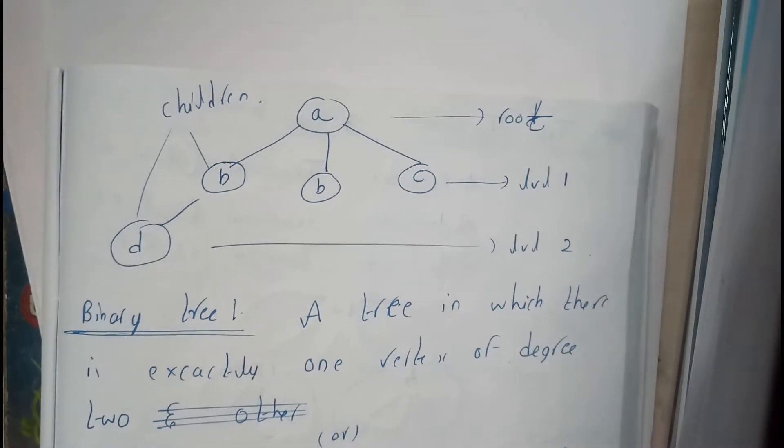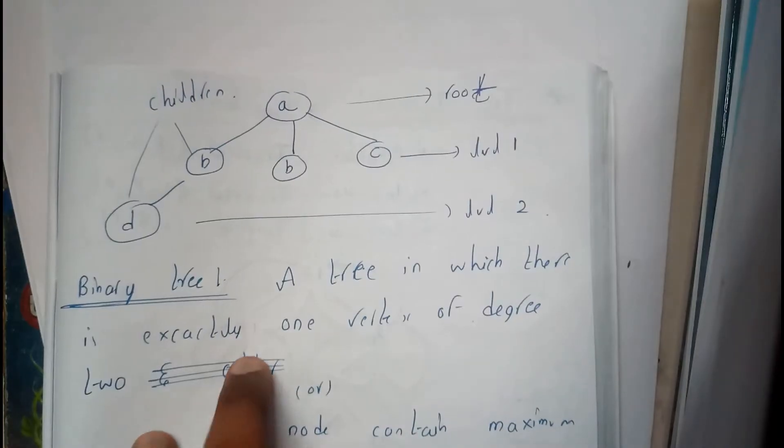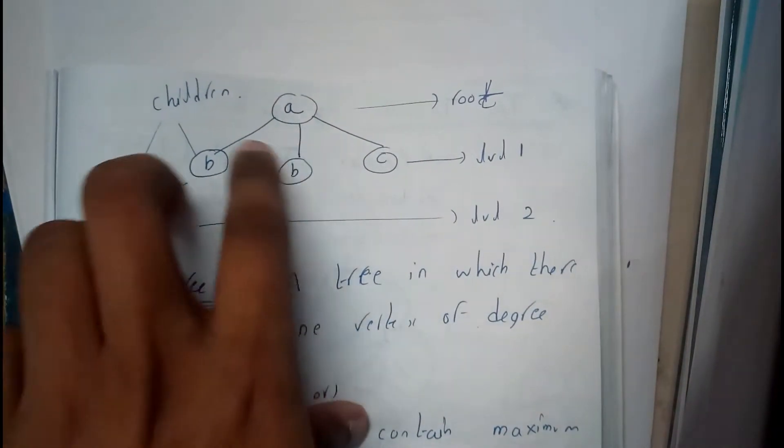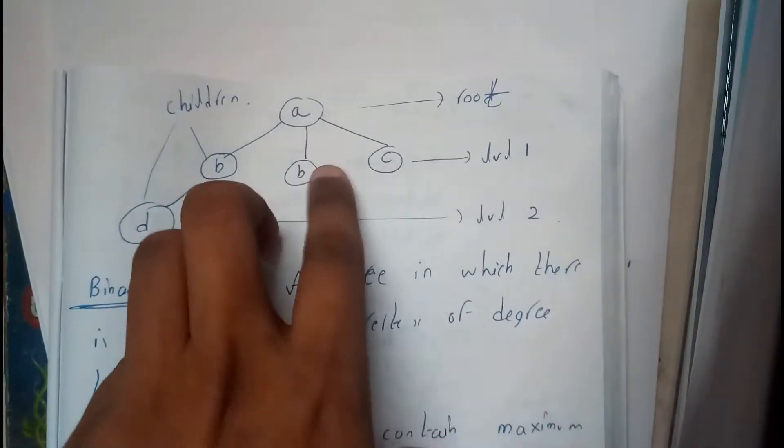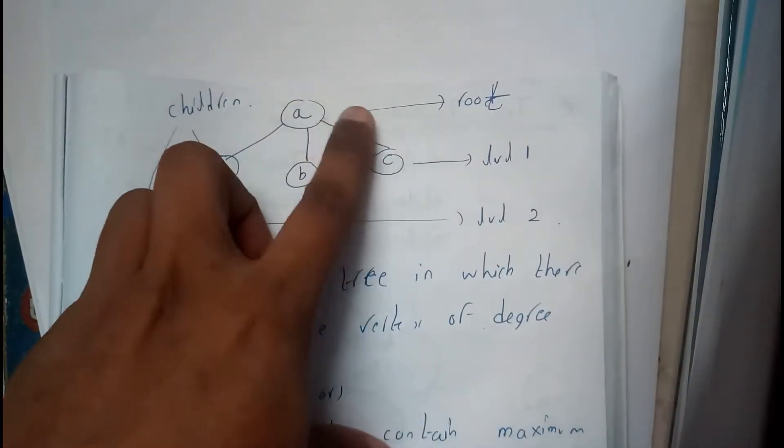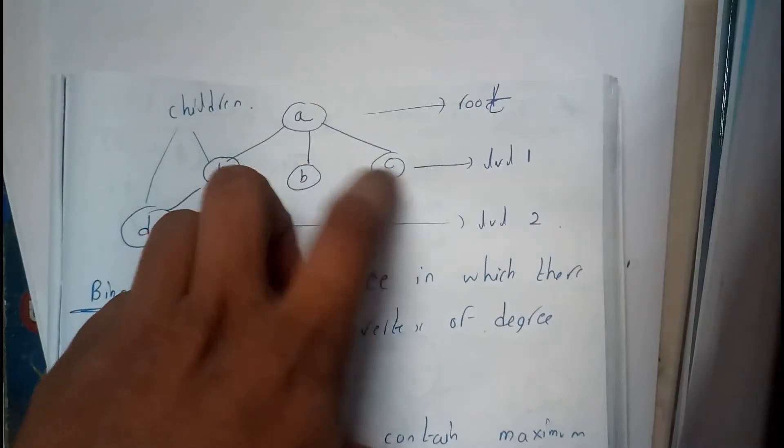Okay guys, for the past three definitions, this is an example. This is the root node, these are the children nodes, and these are the levels: level one, two, and three.